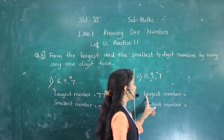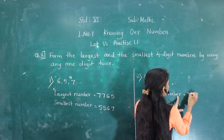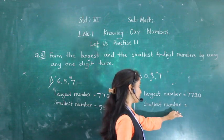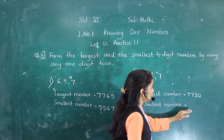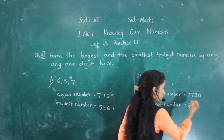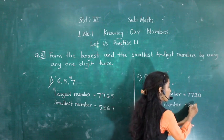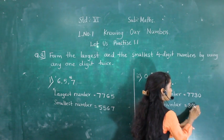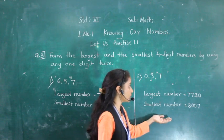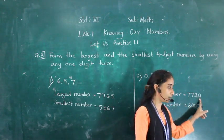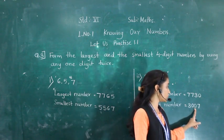For the next part with digits 0, 3, and 7, with one digit used twice: the largest number is 7730. For the smallest number, the first digit must be non-zero, so we use 3 first, then place 0 twice and then 7, giving 3007. The smallest number is 3007 and the largest is 7730.